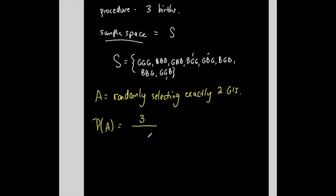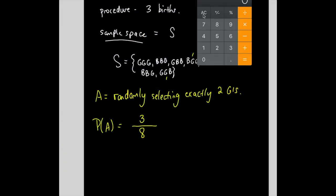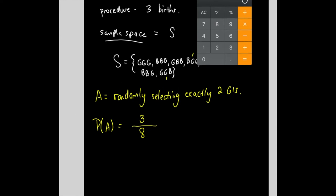So I have three different ways that that can happen. So there are three different ways that I can get where event A can occur out of the total number of events, which in this case, from my sample space, is eight. So the probability of randomly selecting or randomly getting exactly two girls from this type of procedure is three over eight.